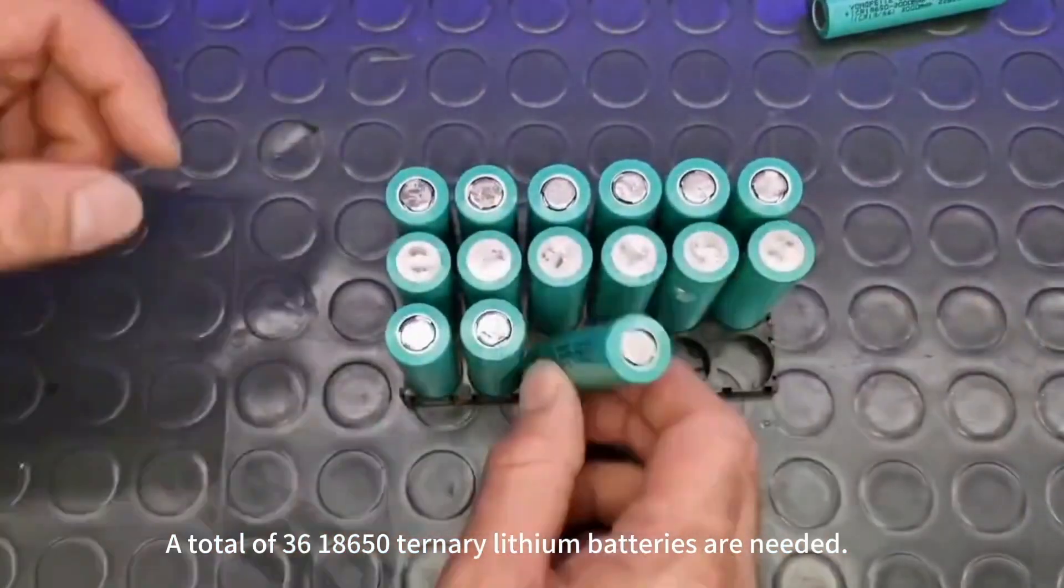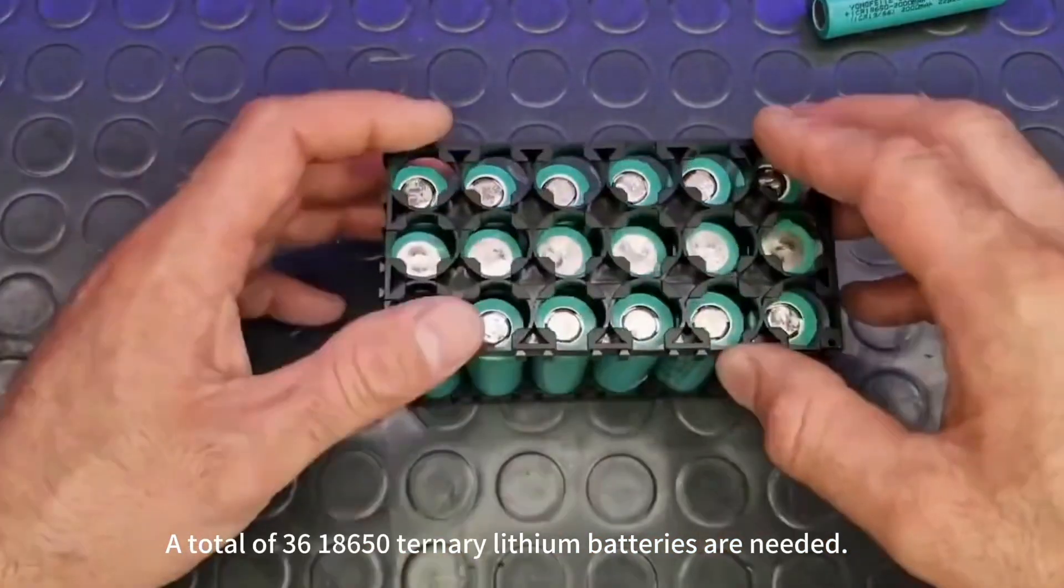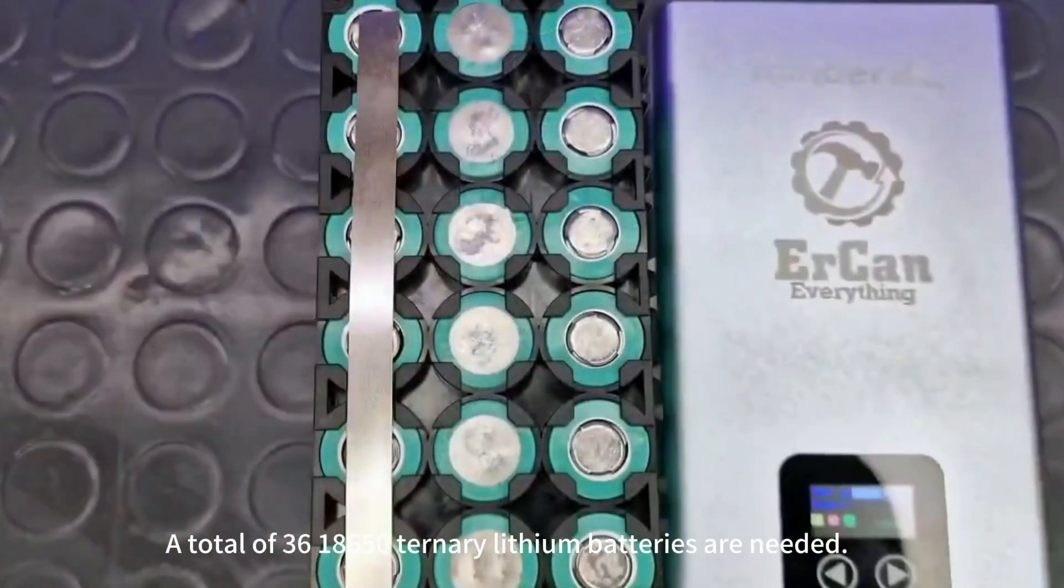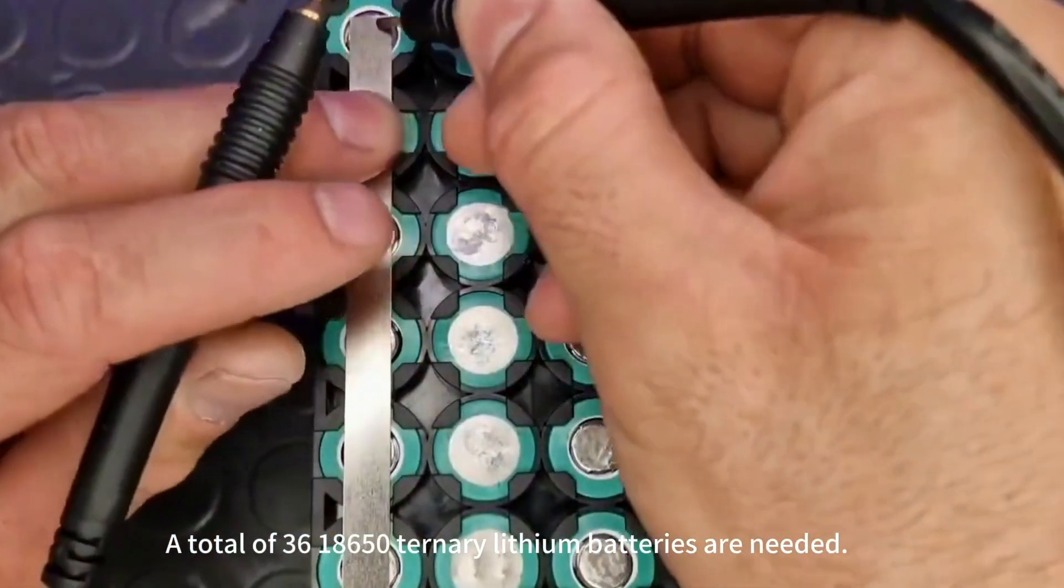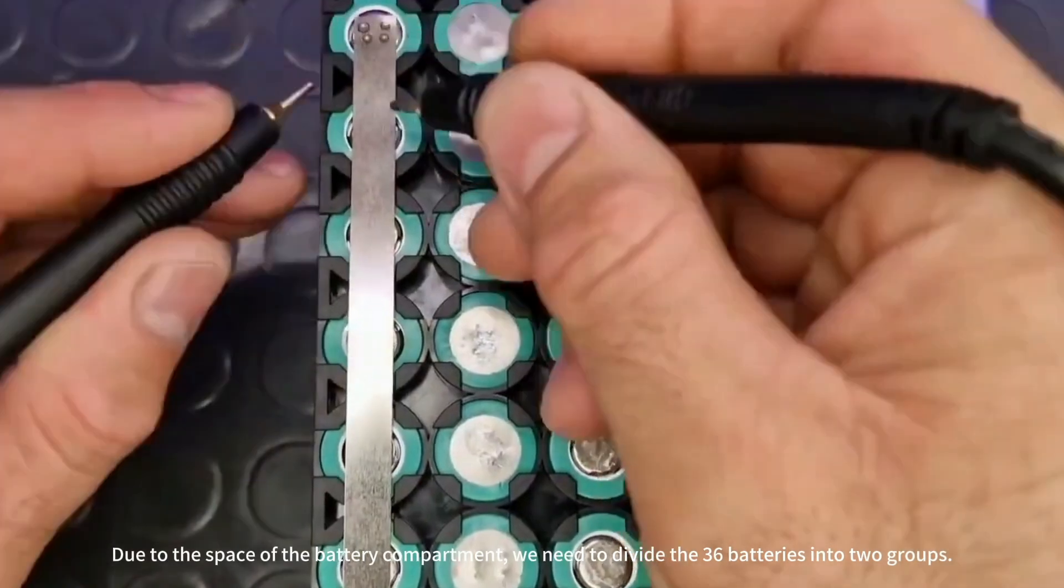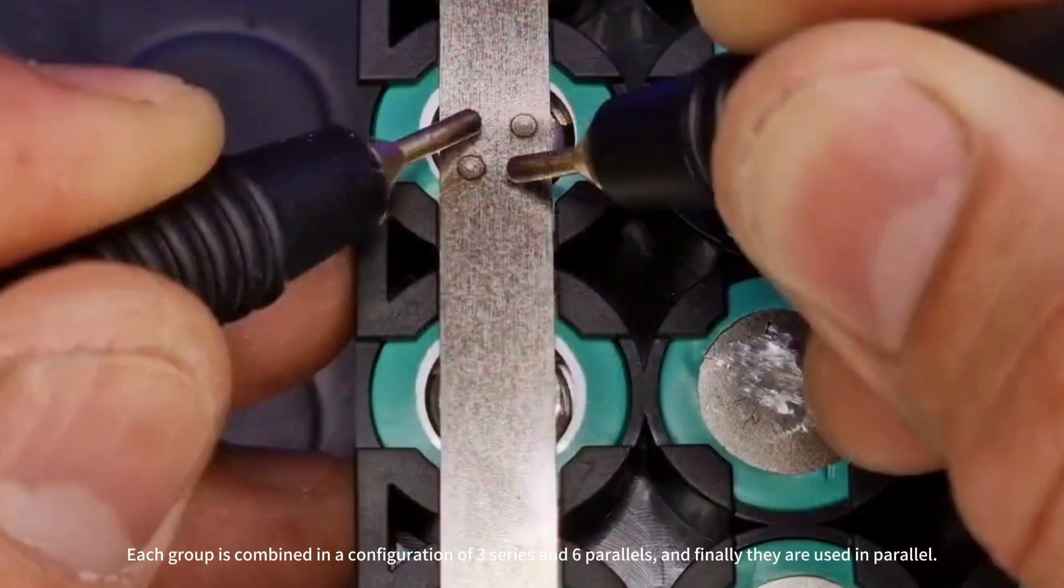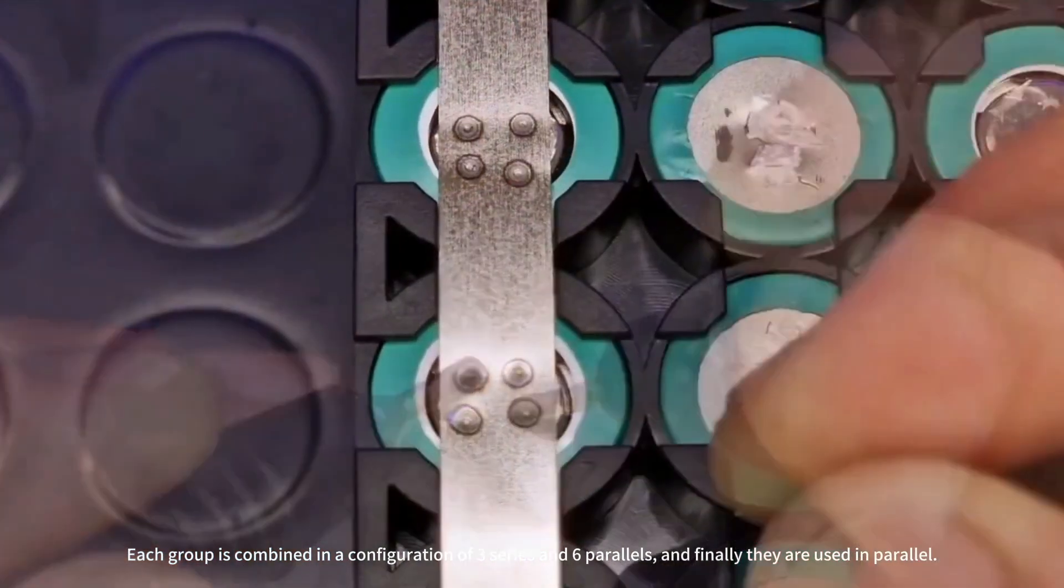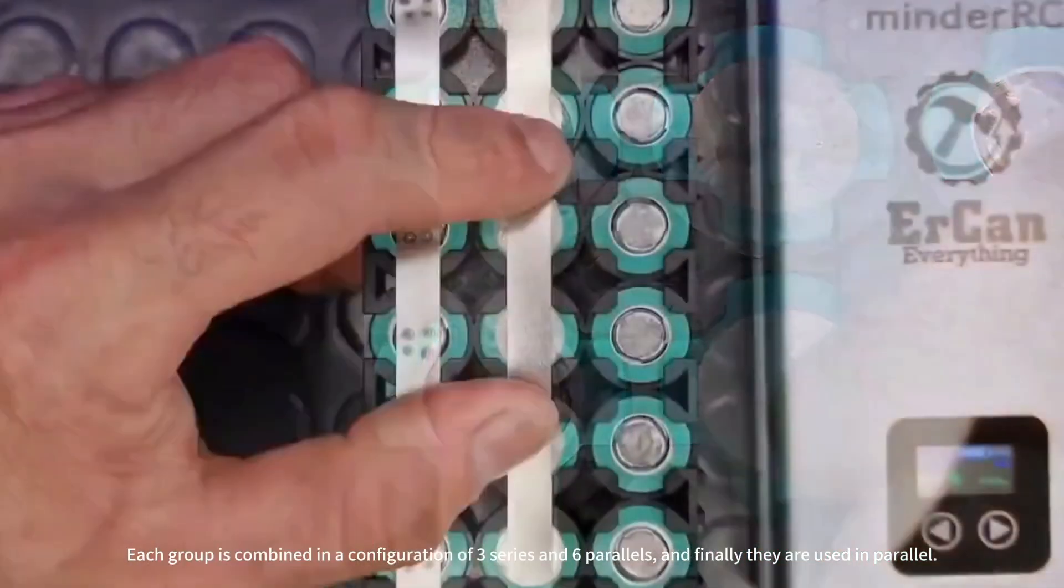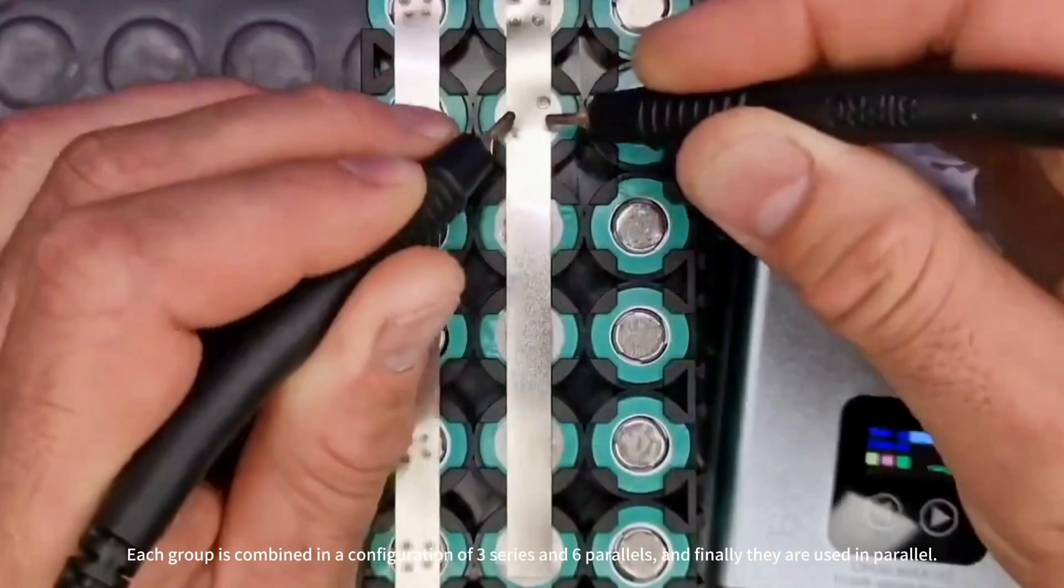A total of 36 18650 ternary lithium batteries are needed. Due to the space of the battery compartment, we need to divide the 36 batteries into two groups. Each group is combined in a configuration of three series and six parallels, and finally they are used in parallel.